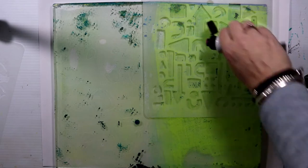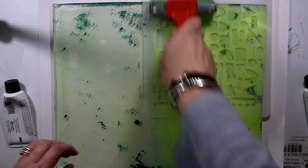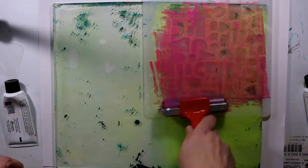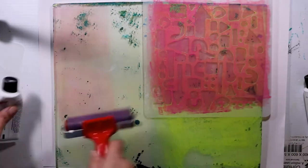I'll just quickly talk you through what I've been doing here. I've put a bit of lime paint on my plate, then I put my stencil down and took my first print off.